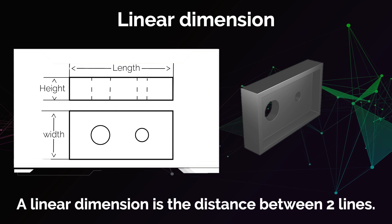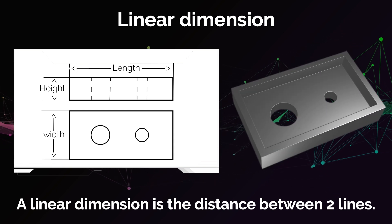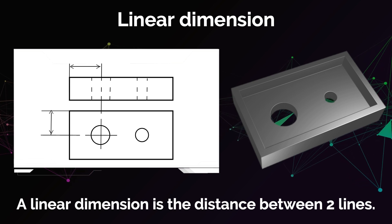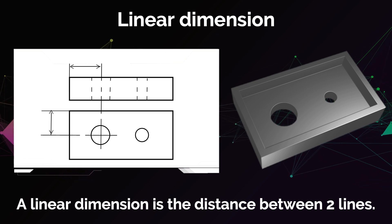You could use a linear dimension to specify the position of a feature, for example, the position of a hole in the part. In this case, the linear dimension is the distance between one edge of the part and the centerline of the hole.